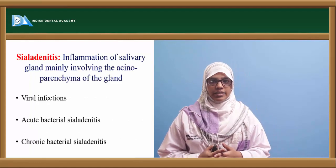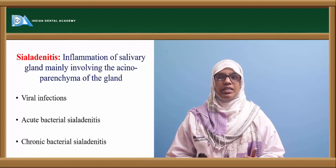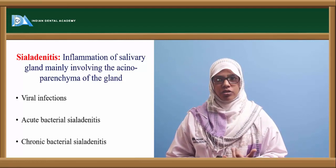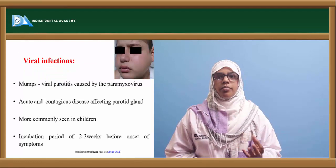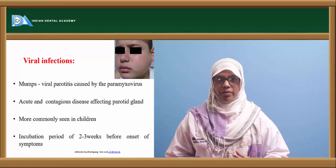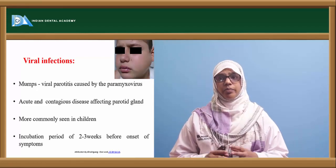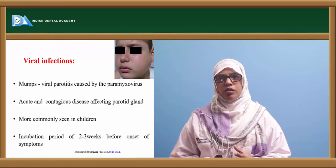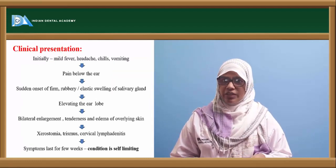Sialadenitis is inflammation of the salivary gland, mainly involving the acinar parenchyma. It can be viral, acute bacterial, or chronic bacterial. Viral infection — called mumps — is caused by paramyxovirus. It is an acute, contagious condition affecting the parotid gland bilaterally, more commonly seen in children, with an incubation period of two to three weeks. Initially there is mild fever, headache, chills, and vomiting.